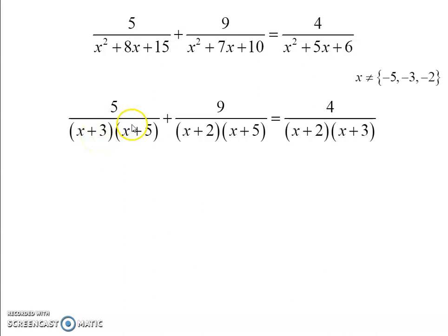From here, x can't be negative 3, it can't be negative 5, it can't be negative 2. Then these ones are repeated. I've already got them.